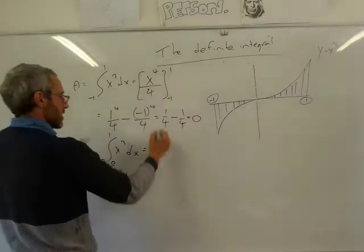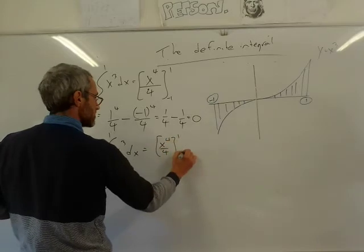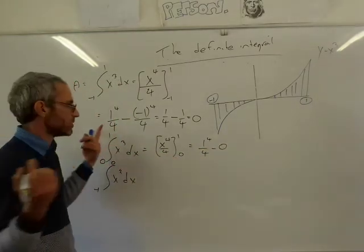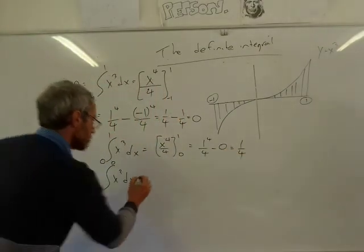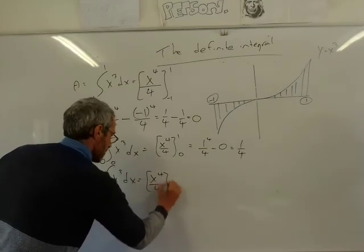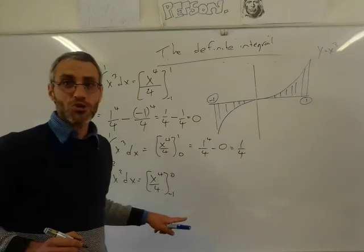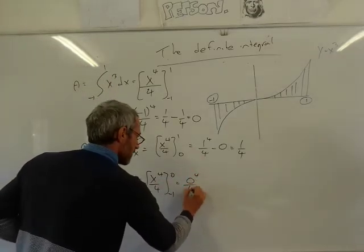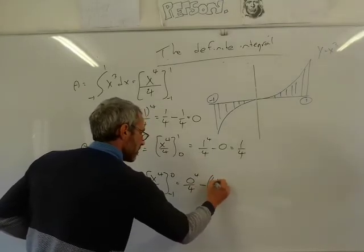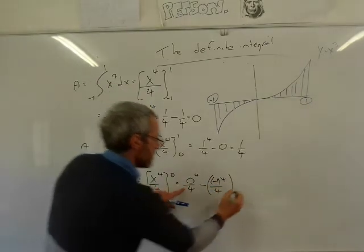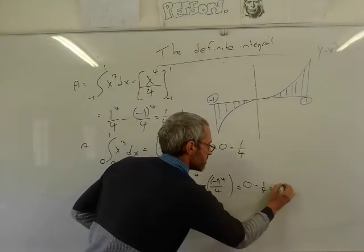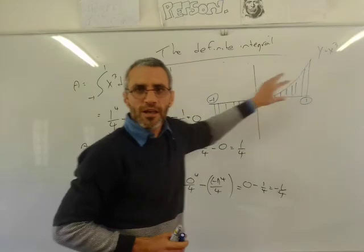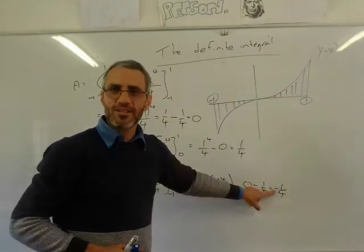For 0 to 1: x⁴ divided by 4 evaluated from 0 to 1 gives 1⁴/4 minus 0 = a quarter. For minus 1 to 0: 0⁴/4 minus (−1)⁴/4 = 0 minus 1/4 = minus a quarter. That's negative because it's under the graph. There's a symmetry here — the area on each side is a quarter.